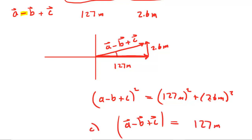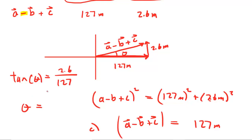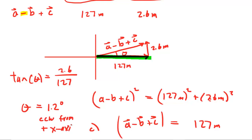For part D, we need to get this angle. The tangent of that angle equals the opposite over the adjacent, and you just take the inverse tangent of that ratio. When you do that, you get a pretty small angle — only about 1.2 degrees. You'll notice that this is already measured in the counterclockwise direction relative to the positive x-axis. So 1.2 degrees counterclockwise from the positive x-axis is the correct answer to part D.